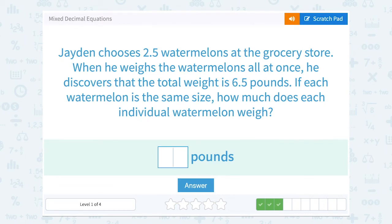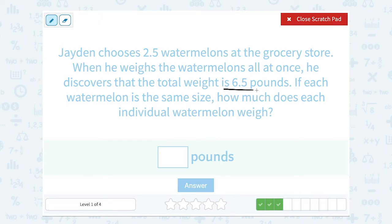Jayden chooses 2.5 watermelons at the grocery store. When he weighs the watermelons all at once, he discovers the total weight is 6.5 pounds. If each watermelon is the same size, how much does each watermelon weigh? Well if we know the total weight is 6.5, and we know there's 2.5 watermelons, to figure out the weight for each one, we would need to divide.